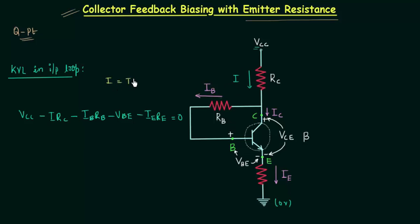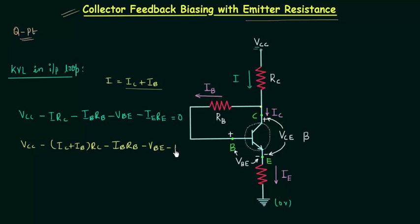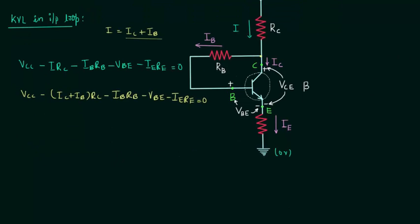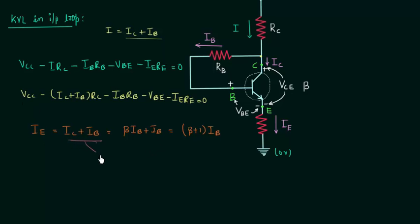Applying KCL at this node, current I is equal to IC plus IB. So the equation becomes: VCC minus (IC + IB)·RC minus IB·RB minus VBE — which equals 0.7V for a silicon transistor — minus IE·RE equals 0. We know the emitter current IE equals IC plus IB. Collector current IC equals β times IB, so IC plus IB equals (β + 1)·IB.